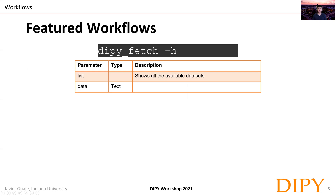Let's start with a very simple workflow such as DiPi fetch, which allows us to download some of the data included in DiPi. The usage is as simple as typing DiPi fetch, and if you don't know which datasets are included or what their names are, you just replace the -h parameter with the parameter list.